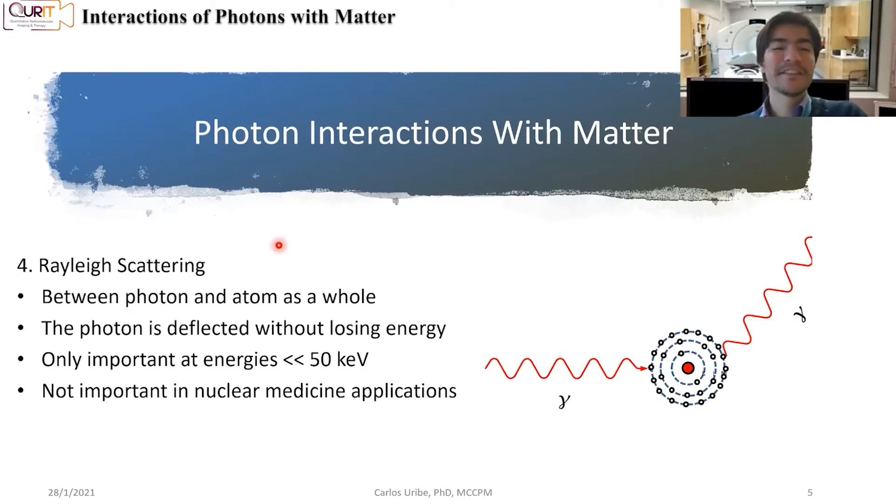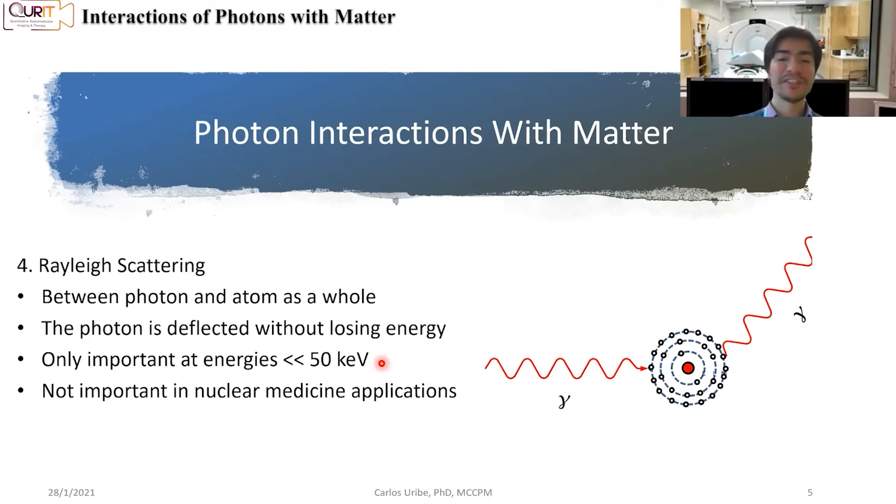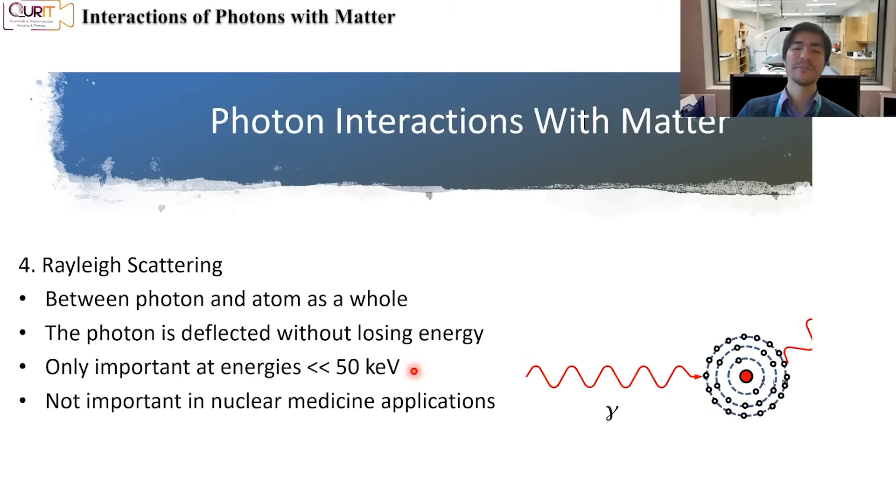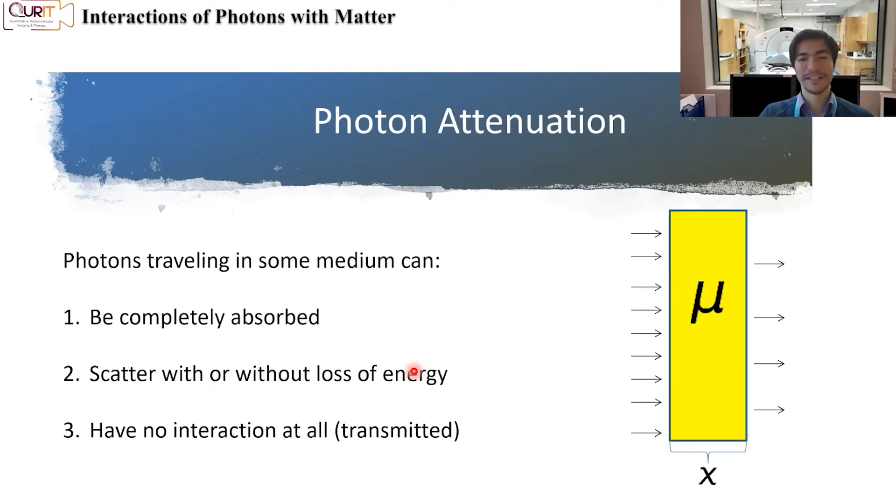Lastly, there's this thing called Rayleigh scattering. It's not really important in what we do in nuclear medicine. We don't really worry too much about this, but this is just an elastic scattering of the photon. It's an interaction between an initial photon and the atom as a whole. So it's just a deflection of that photon but without losing any energy. So here, basically, your initial photon is the same as your final photon. They didn't lose energy. The frequency at the beginning is the same as the frequency at the end. And it's only important at energies that are much lower than 50 keV, which are energies that we don't really deal too much here in nuclear medicine.